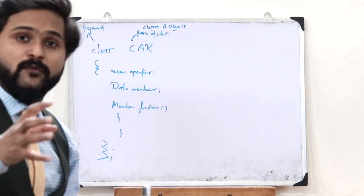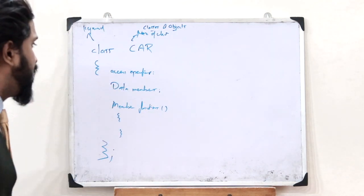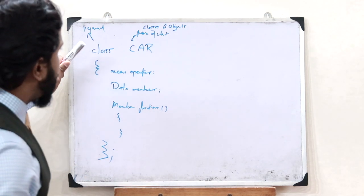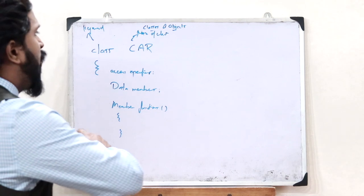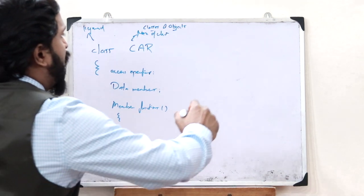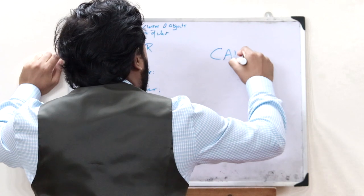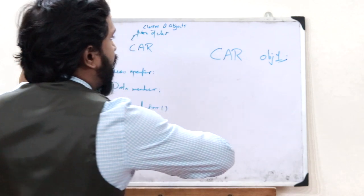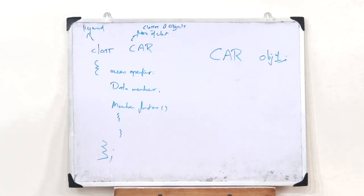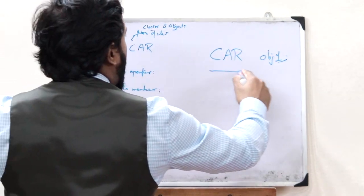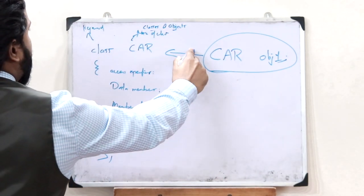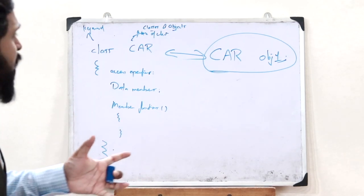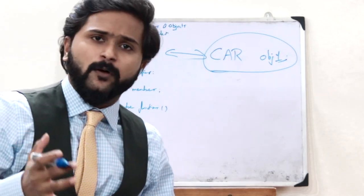Now let us see how to declare an object of the class 'car'. To declare an object, we first write the name of the class — 'car' — and then write whatever name we want to give to that object, for example 'car_object1'. A particular object of the class car has now been created. That is the basic idea behind classes and objects.